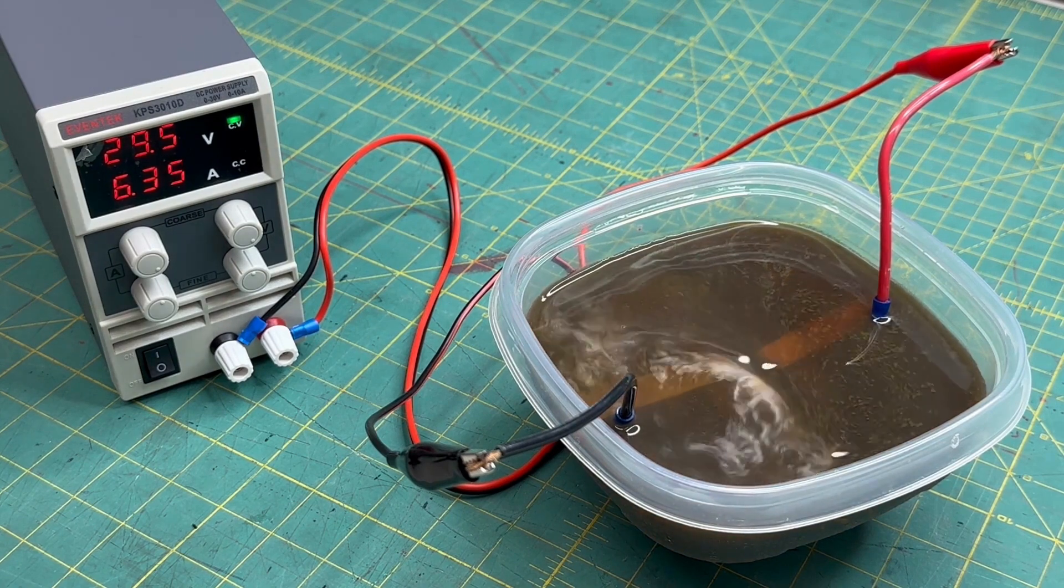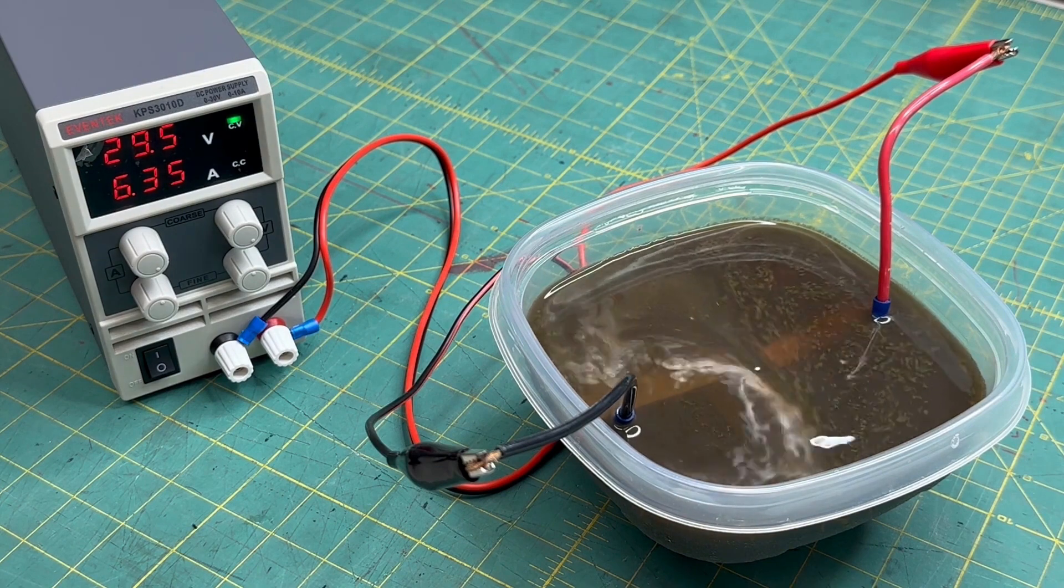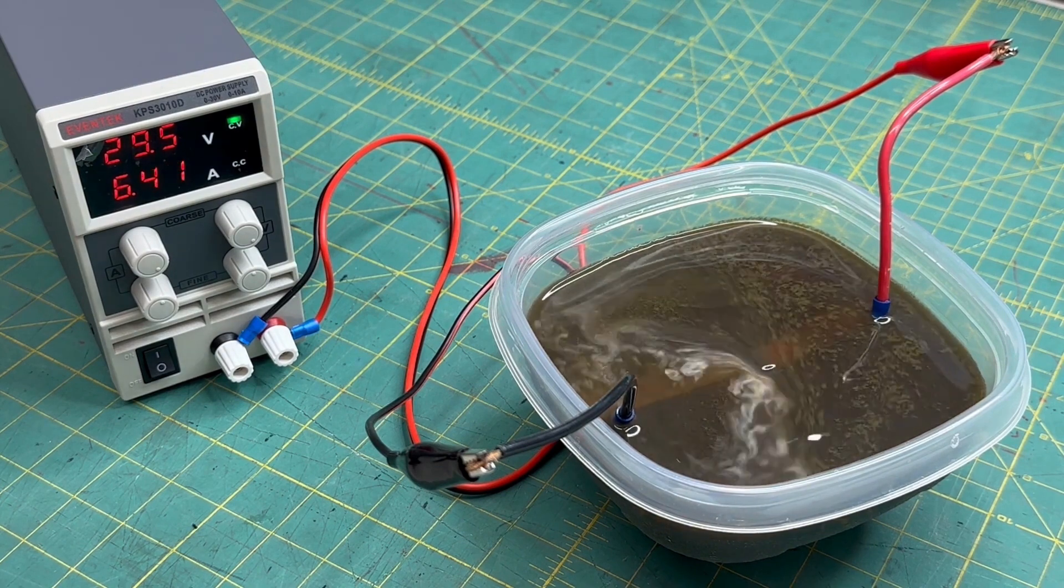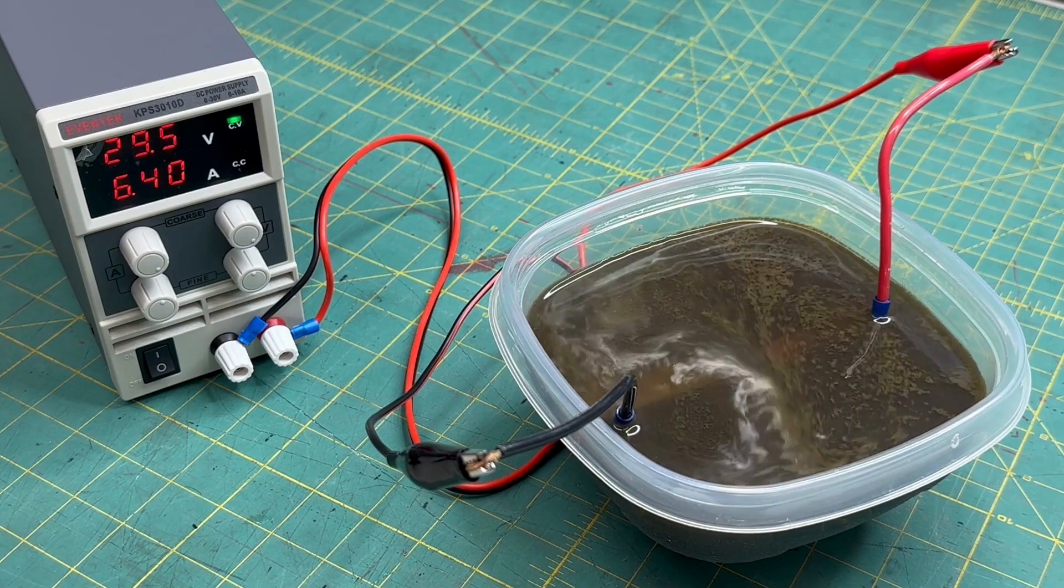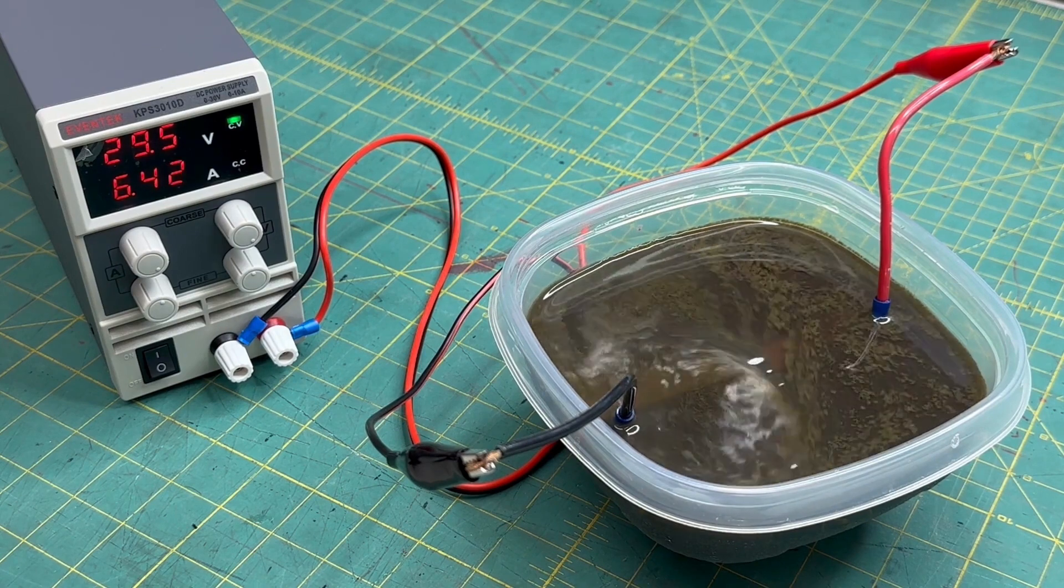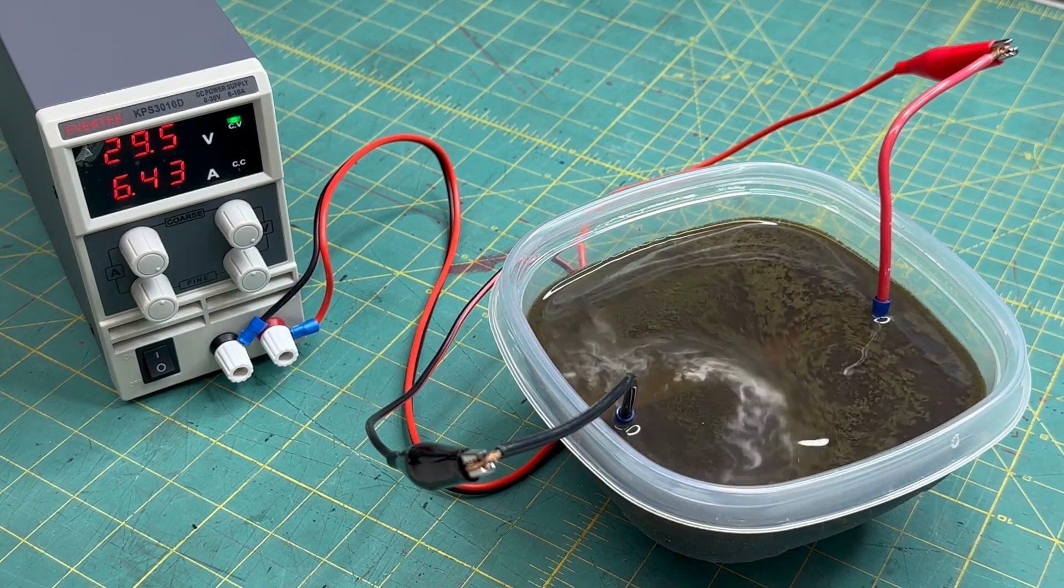So no moving parts, it's just the magnetic field and the current just driving the fluids through. The electrodes are getting corroded like crazy and that's what everything is turning the water brown. Now that is magneto hydrodynamics in action.